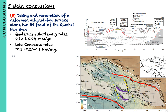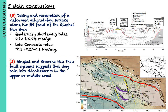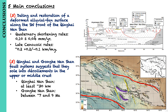The structural architecture of the Qinghai and Gonghe-Nanshan fault systems suggests that they sole into décollements in the upper or middle crust. The décollement depth of the Qinghai-Nanshan appears to be at least 30 km, whereas the décollement depth beneath the Gonghe-Nanshan is shallower, between 7 and 9 km.